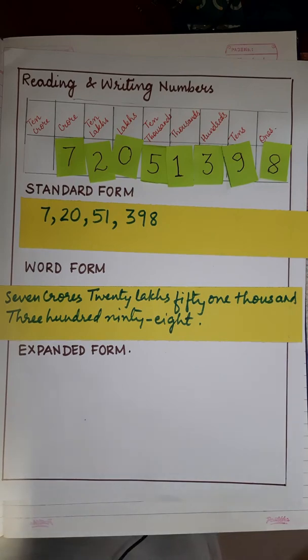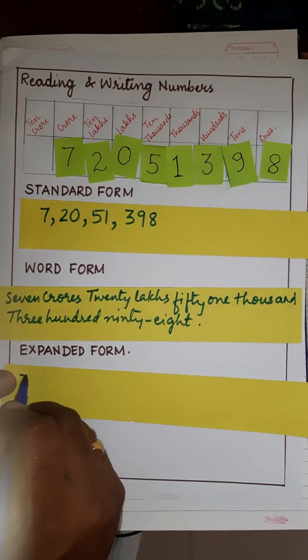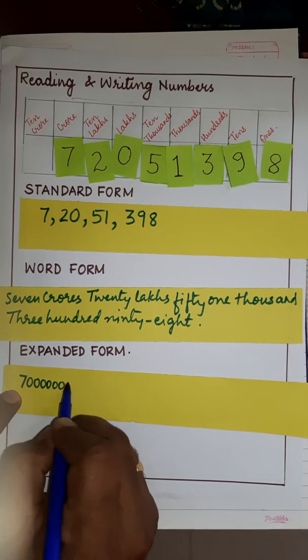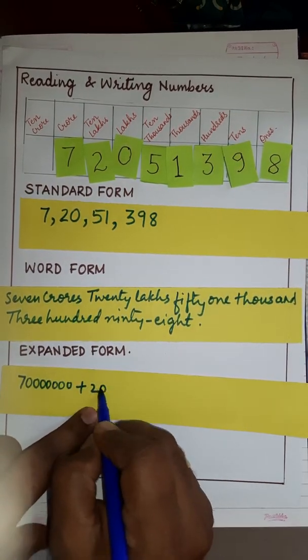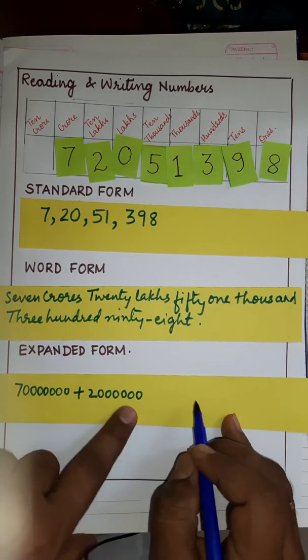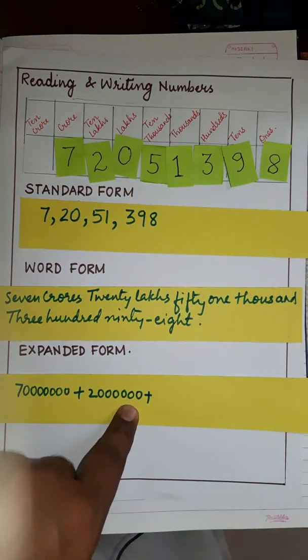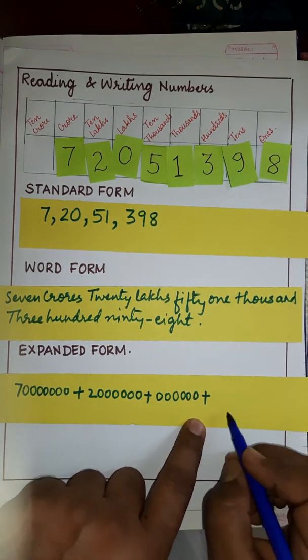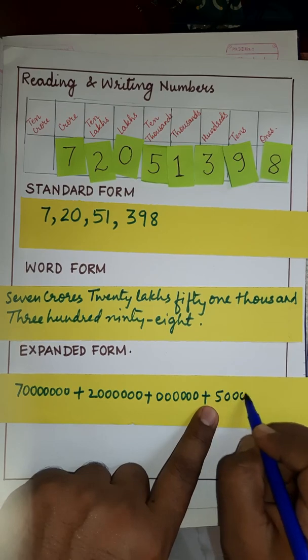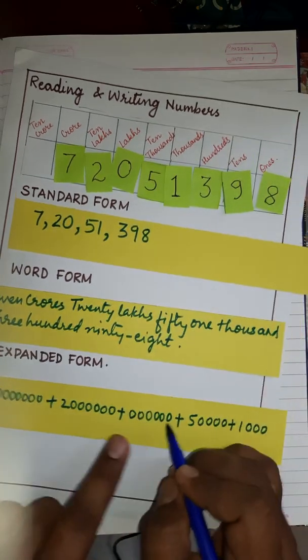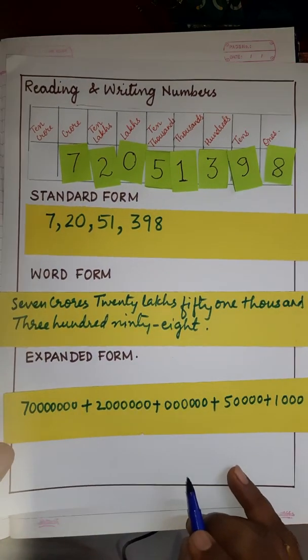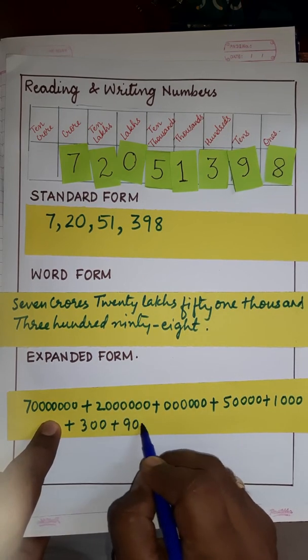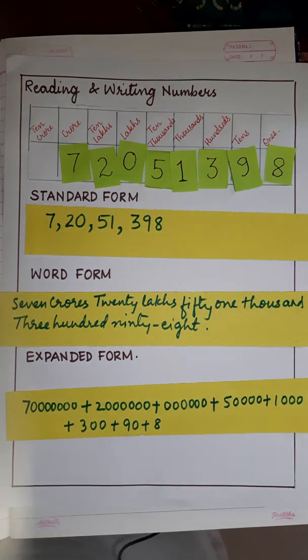And coming to expanded form, we will write it as 7 followed by 1, 2, 3, 4, 5, 6, 7 zeros, plus 2 followed by 6 zeros, plus 0 followed by 5 zeros doesn't make any sense, but still we can write plus 5 followed by 4 zeros, 1 followed by 3 zeros, plus 3 followed by 2 zeros, plus 9 followed by 1 zero and 8. This is how we write the number.